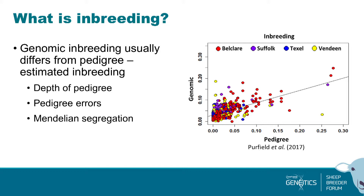You might also have pedigree errors. In one example the pedigree said inbreeding should be about 0.25, but genomics said it should be about 0.05 — so the pedigree looks wrong. The third reason is Mendelian segregation: for any individual, they don't get exactly a quarter of each grandparent's genome — there's variation around that. Using genomic tools we can get a better handle on that and get more accurate estimates of actual inbreeding.